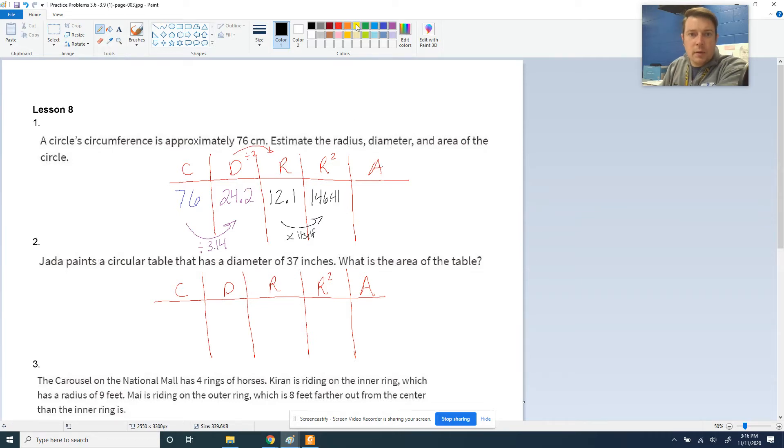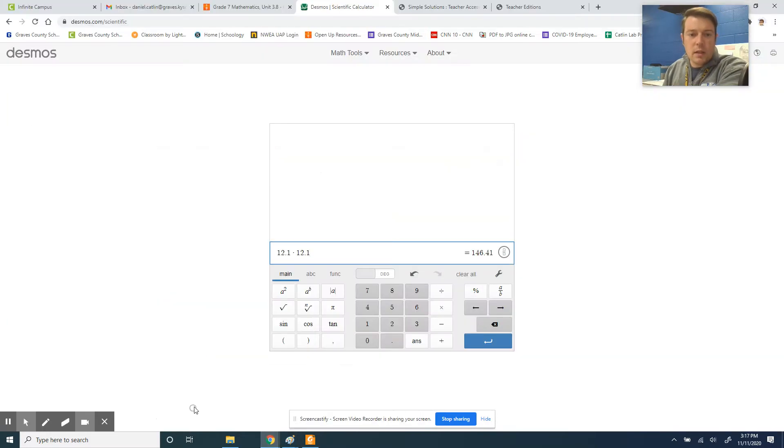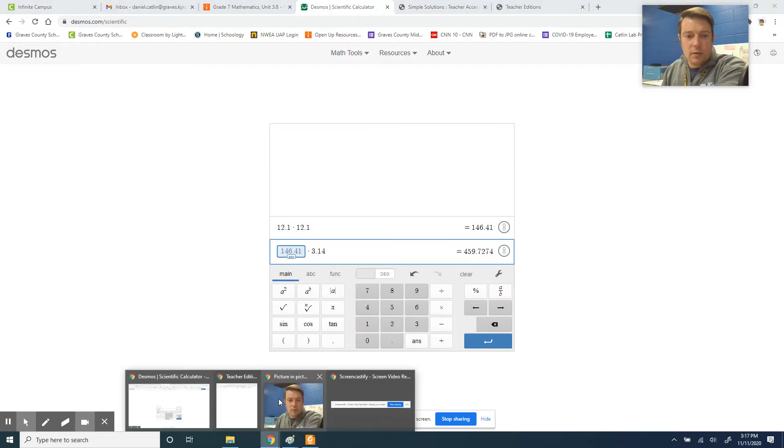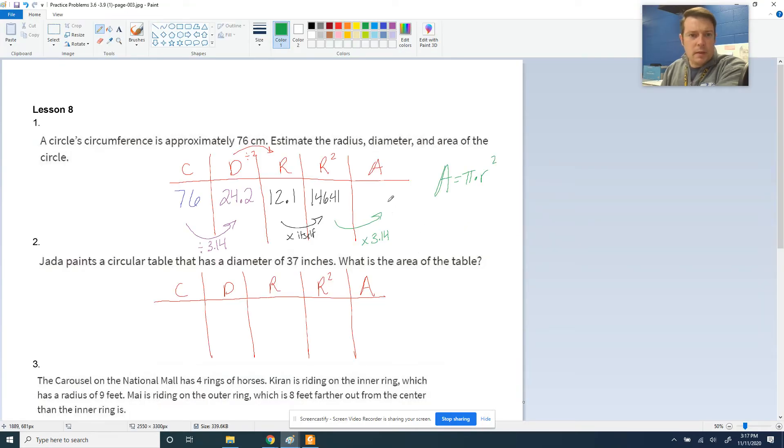So 146.41. And then to get from the last leg to the area, we have to multiply by pi again because area is pi times the radius squared. So that multiplies out to 146 times pi. And we multiply that answer times pi, and that would give us our answer, which is about 460 centimeters squared. That is our area.